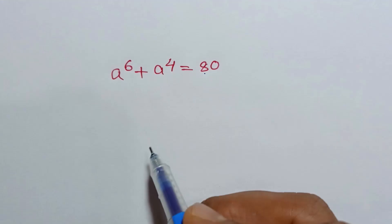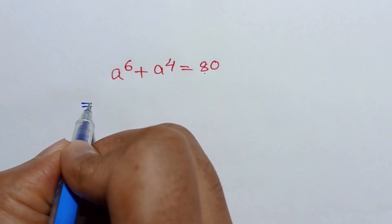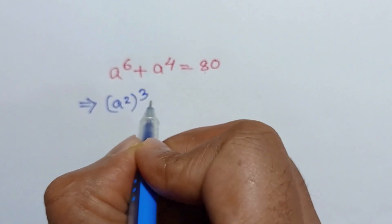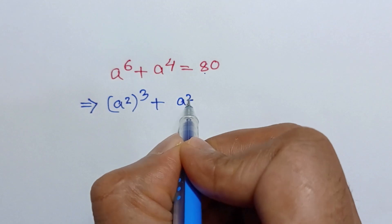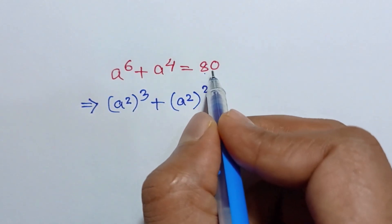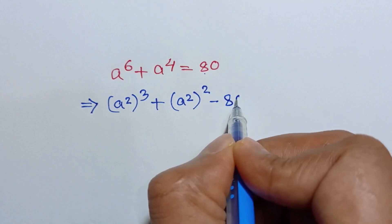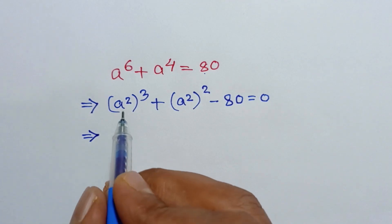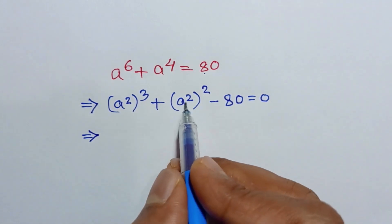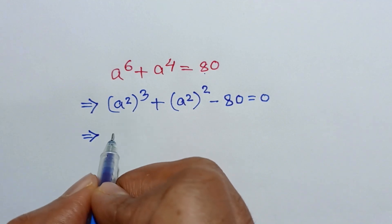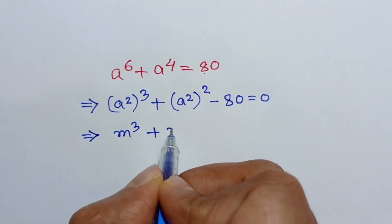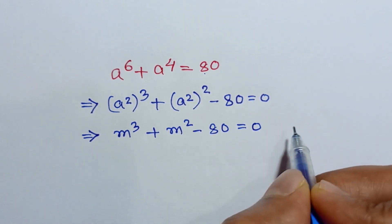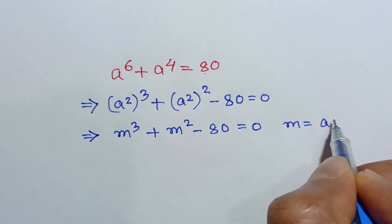We can write a to the power 6 as (a²)³ and a to the power 4 as (a²)². Taking 80 to the left side gives us (a²)³ plus (a²)² minus 80 equals 0. Let's substitute a² = m, so we write m³ + m² − 80 = 0, where m = a².